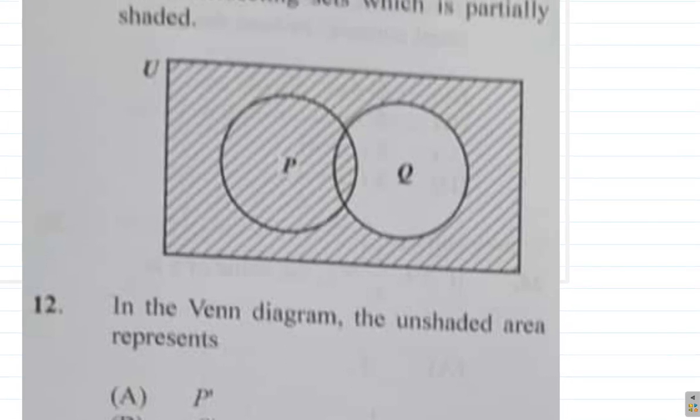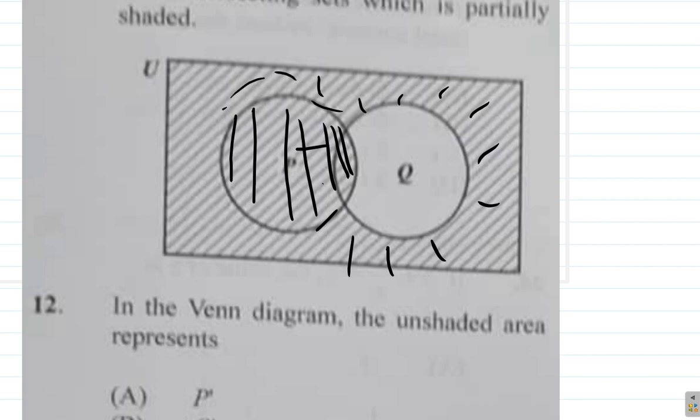P intersect that—P would be only in here. P intersect Q complement would be all around here. So P intersect Q complement—this is not in Q complement, so it's not C either.